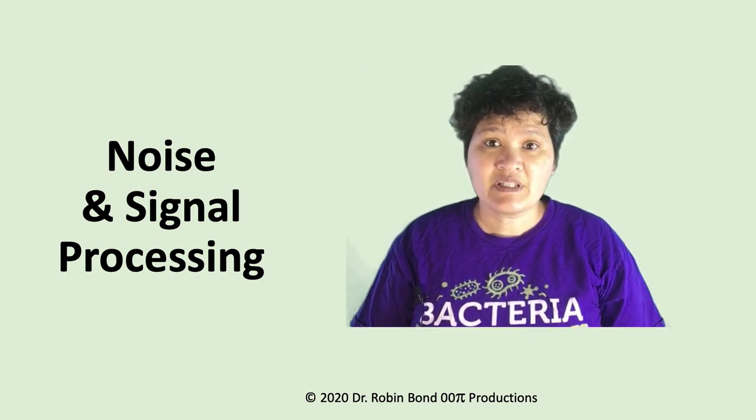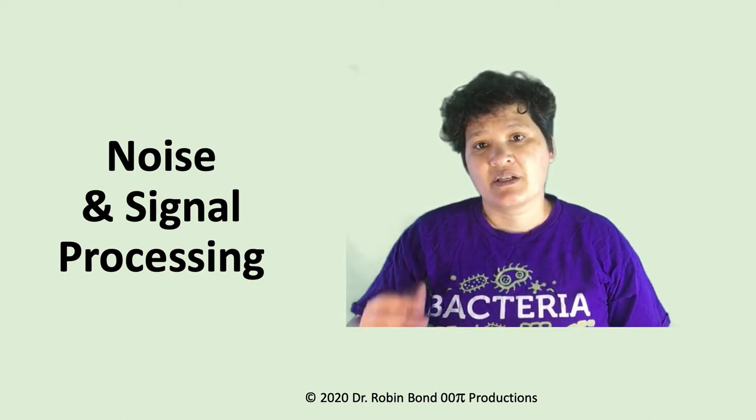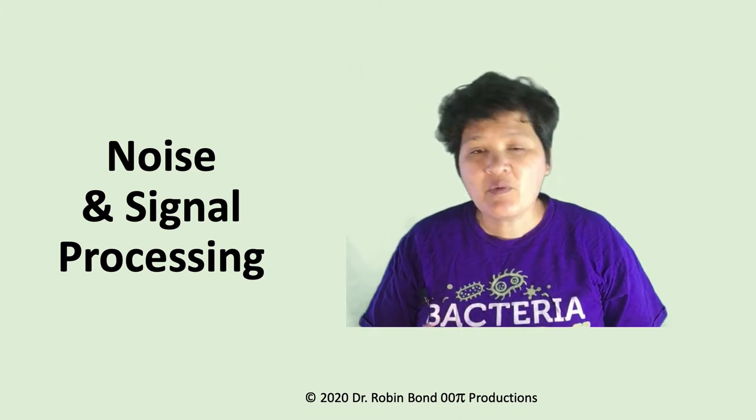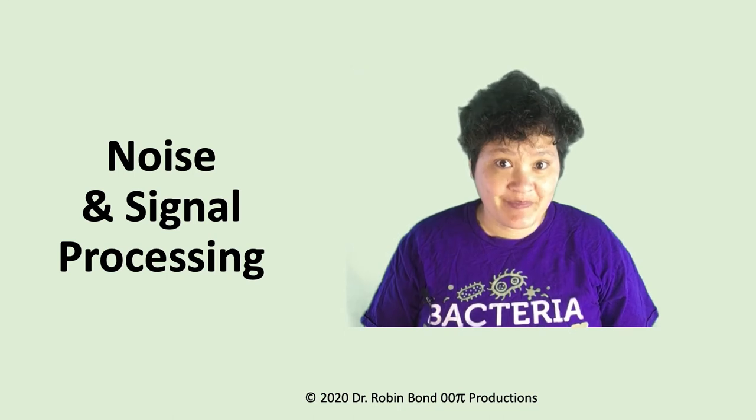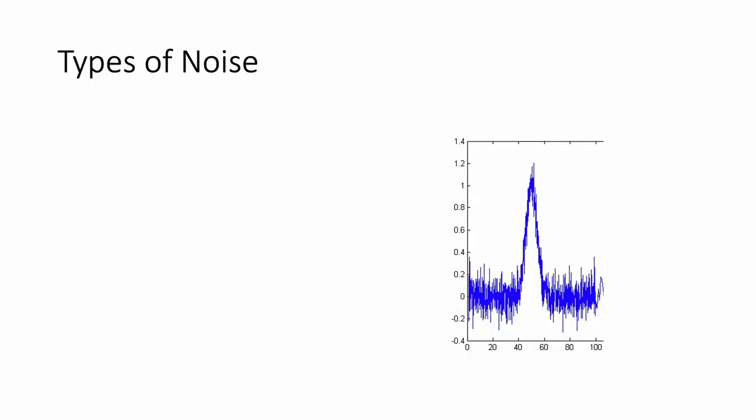Hi. Today we're going to talk about signals and noise and how we process signals to get rid of noise. So first of all, let's look at an operational definition of noise. When you get data, you expect to get a nice clear signal that tells you exactly where you are measuring things. But in reality, there is no nice clear signal. There's a lot of fluctuation as you can see in this picture. And we tend to separate noise into two different types of noise, chemical noise and instrumental noise.